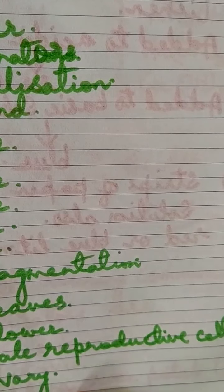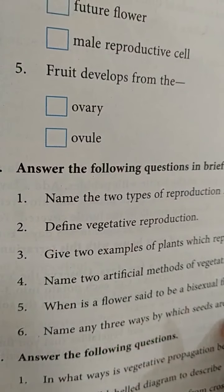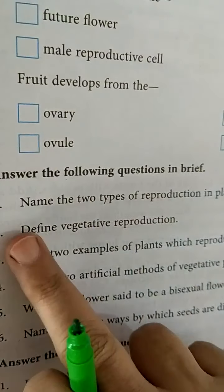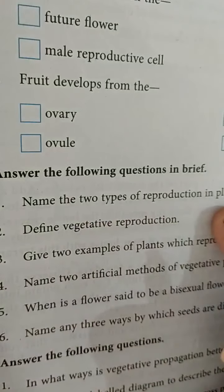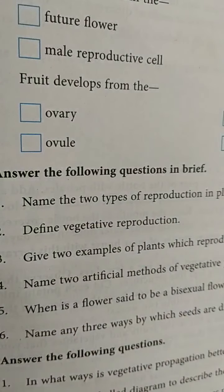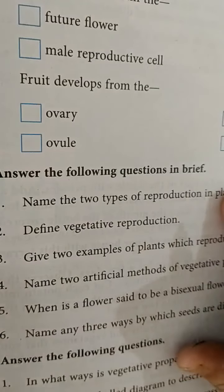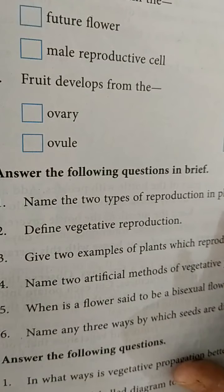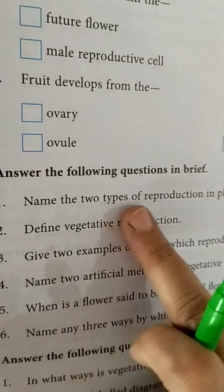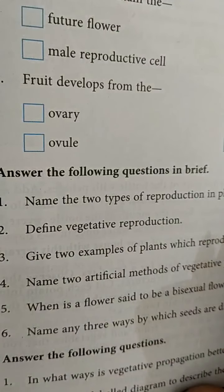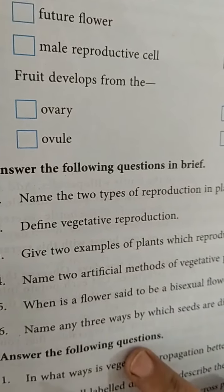Now we will do the question-answer part. Part D is answer the following questions in brief. The first question is: name the two types of reproduction in plants. The two types are asexual reproduction and sexual reproduction, given in your book on page 130.